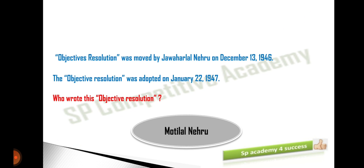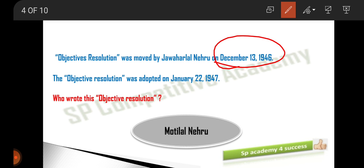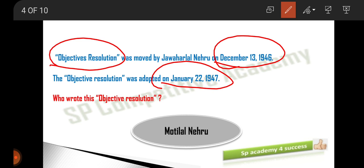After two days of the elections — on December 13th, 1946 — Jawaharlal Nehru moved the Objectives of Resolution. This Objectives of Resolution was then adopted by the Constituent Assembly on January 22nd, 1947, about one month later.